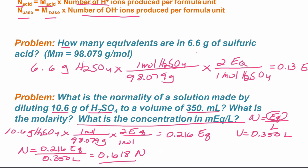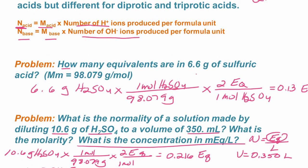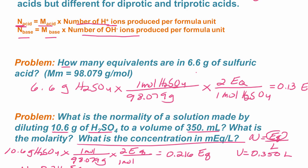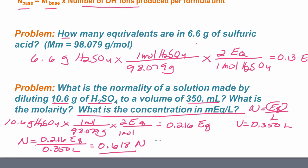So the molarity, if we look up here, if the normality would be the molarity times the number of hydrogen ions produced. So in this case, we know the normality. So the molarity would be the normality divided by the number of hydrogen ions produced.